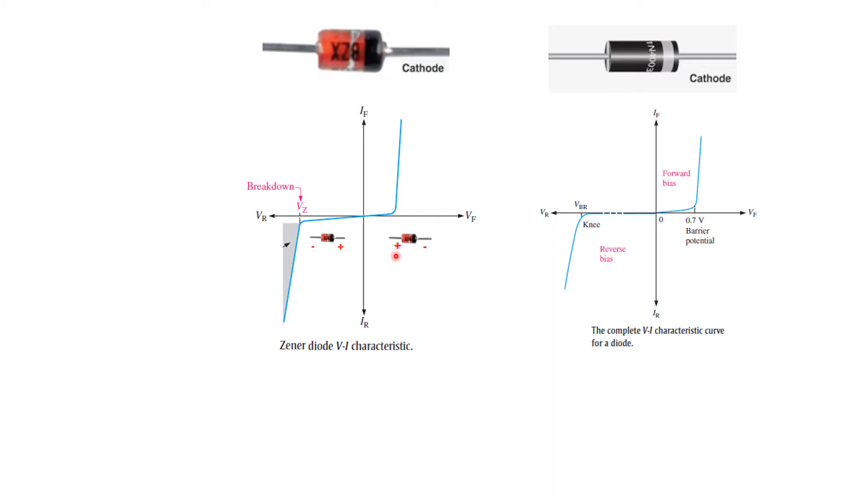The Zener also has this forward bias region but we don't really use that. For that we use the normal diode, but we extensively use the reverse bias region of a Zener diode. So I hope the difference is clear that at whatever voltage this is rated it will break down but when the voltage is reduced it will again start working and it will not be damaged.